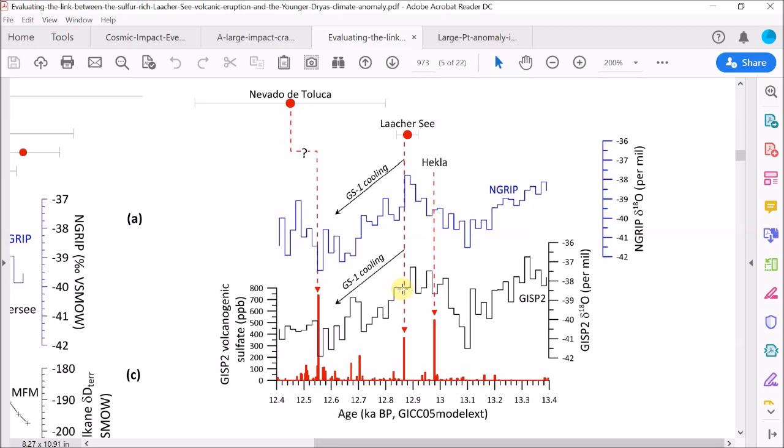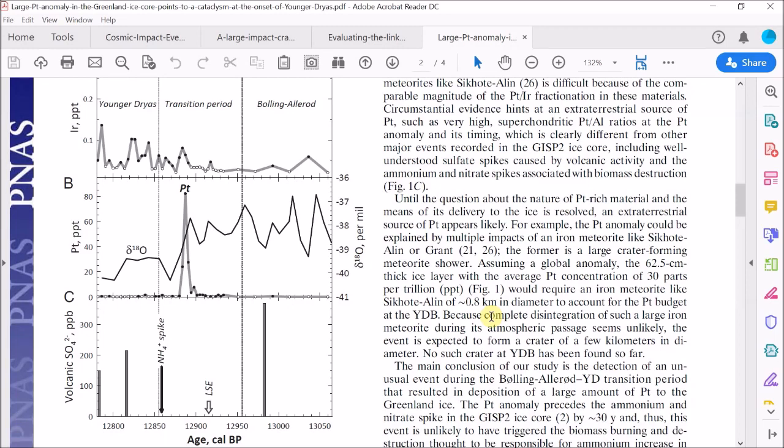In fact we already know of a much higher resolution data set for this evidence published back in 2014 by Petaev et al. Remember this is the paper that first discovered the Younger Dryas platinum anomaly. Here's the platinum signal which occurs right at the onset of this cooling which was thought at the time to be the onset of the Younger Dryas period.